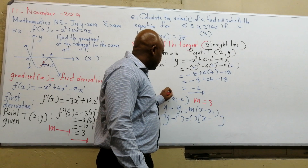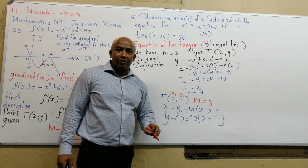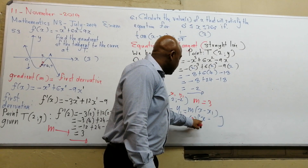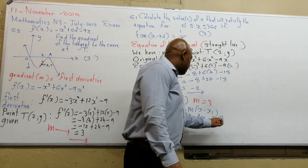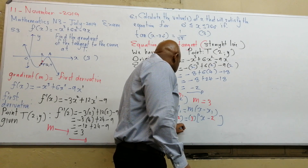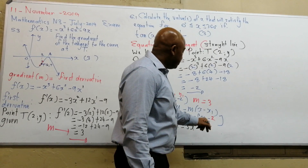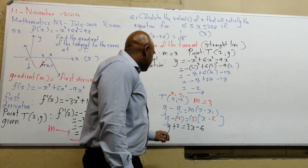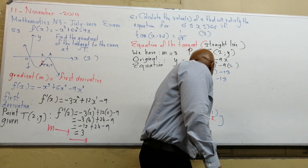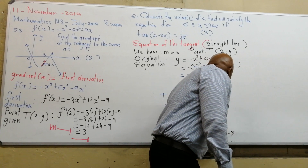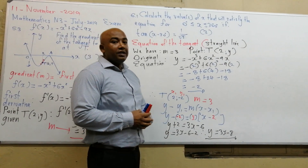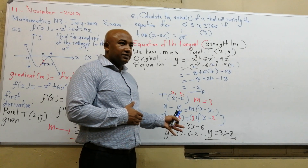So x1 is 2 and y1 is minus 2. Substituting: y minus (minus 2) equals 3 times (x minus 2), giving y plus 2 equals 3x minus 6. Therefore y equals 3x minus 6 minus 2, which simplifies to y equals 3x minus 8. That is the equation of the tangent.